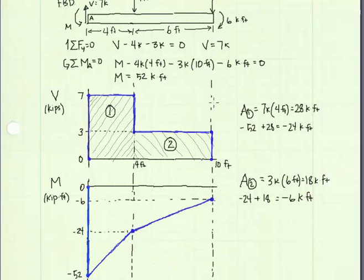And finally, when we get to the right end of the beam, we have a 6 kip foot point moment being applied. It's in the clockwise direction, which means we get an abrupt jump in our moment diagram up 6 kip feet, and we end up at 0. And we're done.